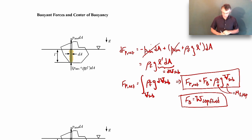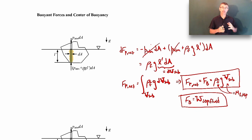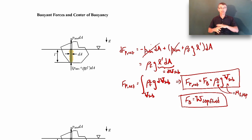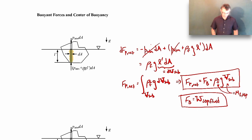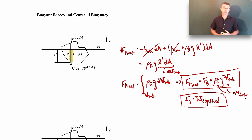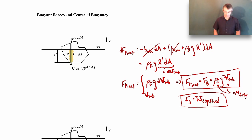Now that we know what the net pressure force — the buoyant force — is, let's figure out where it acts on the object. Similar to when we found the resultant pressure force and center of pressure for hydrostatic forces, we're going to do the same thing here. We have our net pressure force, which we call the buoyant force, and now we want to find where the center of buoyancy is located. The way we do that is to balance moments on the object — we want the distributed net pressure force to give the same moment as the resultant buoyant force acting at the center of buoyancy.